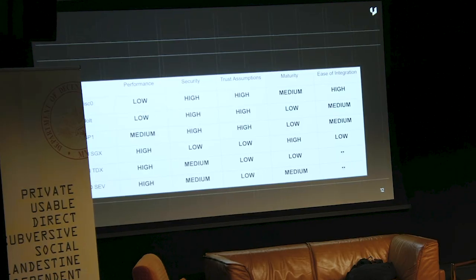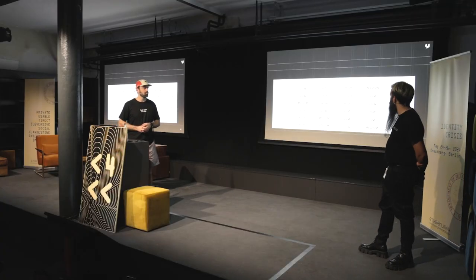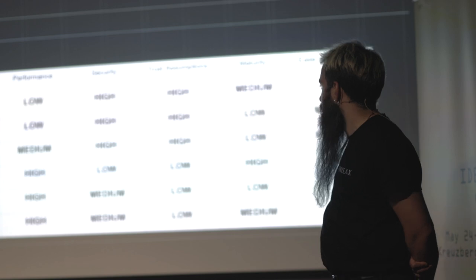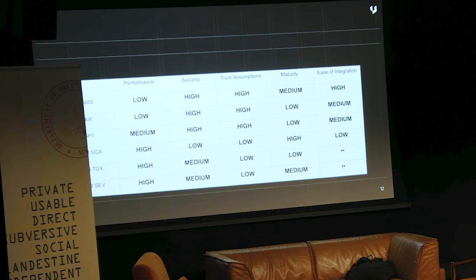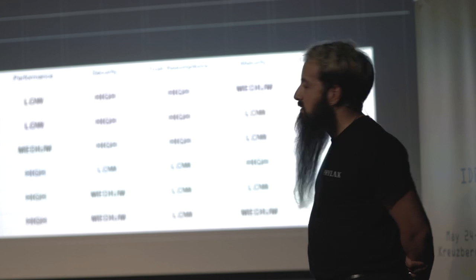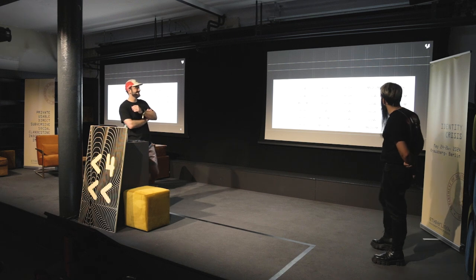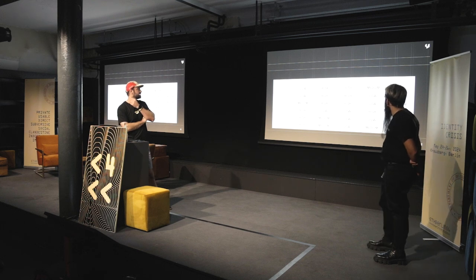For trust assumptions: all ZK options are similar — on untrusted hardware you can't do private computations, and you have to do a trusted ceremony to set up ZK parameters, but the community has aligned that's not terrible. With TEEs, you have a lot of trust assumptions — not as bad as we like to say, but they're there. In terms of maturity, nothing is really mature — everything is quite experimental. RISC Zero and AMD are probably the most mature, with SGX leading on the TEE side, having been around for a few years with a substantial community.